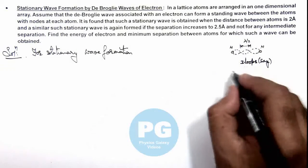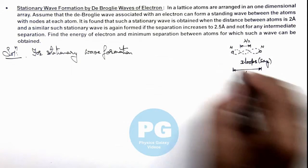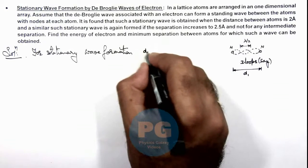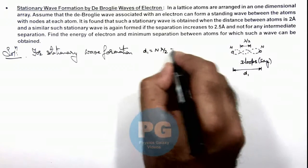Then we can write, if the separation between the two atomic sites is d₁, we can write d₁ must be equal to n times λ/2, which is given here as 2 angstrom.